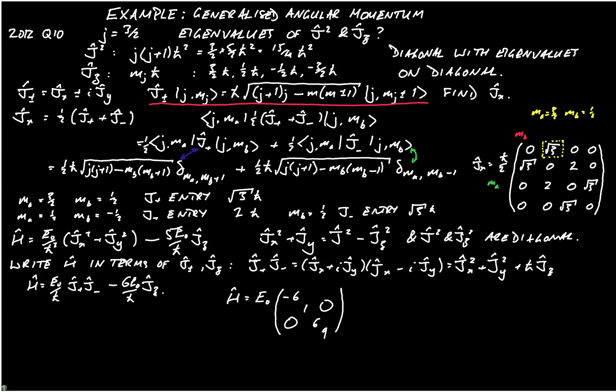This, of course, tells us that the eigenvalues of h, and hence the energy of the system, are minus 6 e0, e0, 6 e0, and 9 e0. That's because h is diagonal, and therefore the diagonal entries must be the eigenvalues of the system.